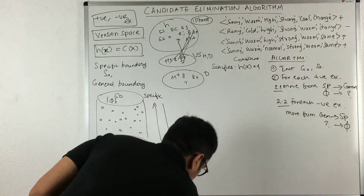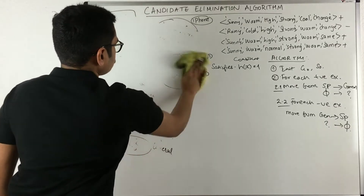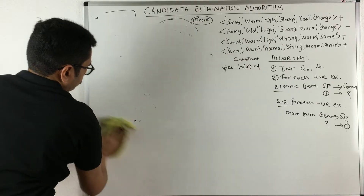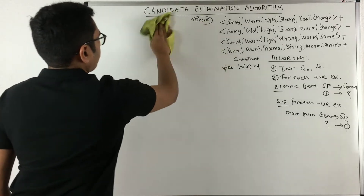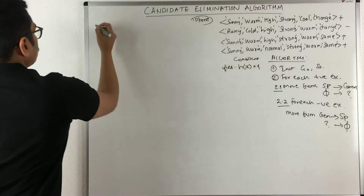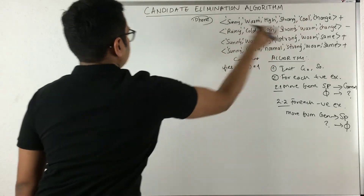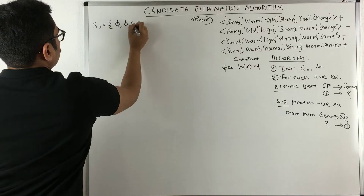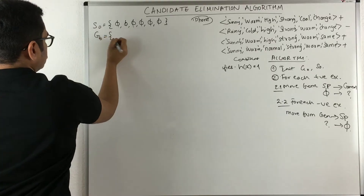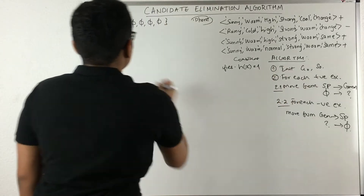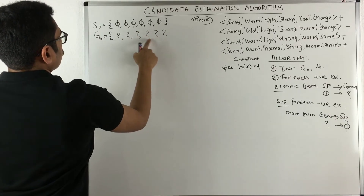We initialize S0 with six attribute slots — one through six — all set to phi. We initialize G0, the general boundary, with question marks across all six attribute positions.